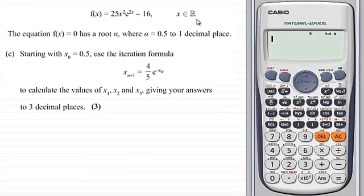And then we're given the equation f(x) equals 0 has a root alpha, where alpha equals 0.5 to one decimal place.